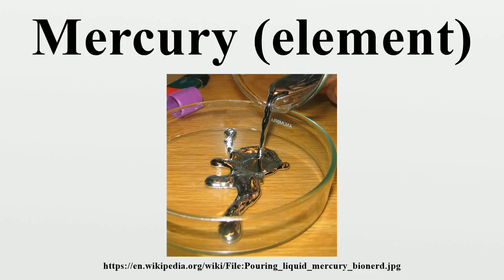Properties. Physical properties: Mercury is a heavy, silvery white metal. Compared to other metals, it is a poor conductor of heat, but a fair conductor of electricity. Mercury has a freezing point of minus 38.83 degrees Celsius and a boiling point of 356.73 degrees Celsius, both exceptionally low for a metal.